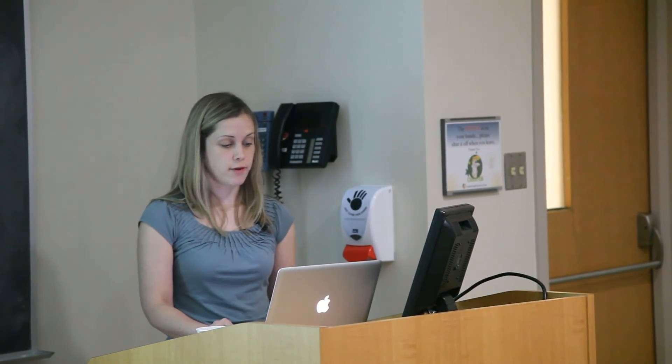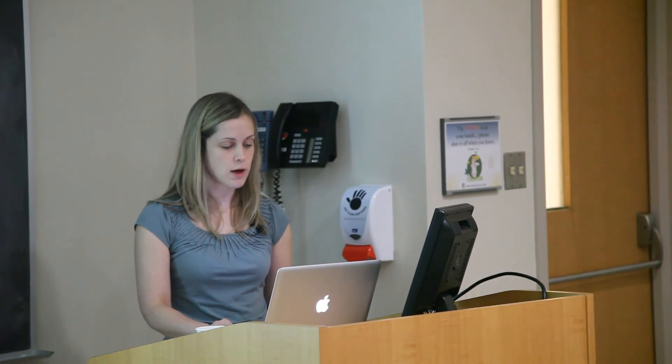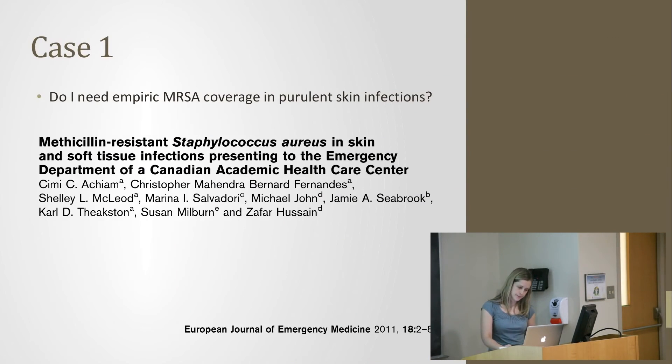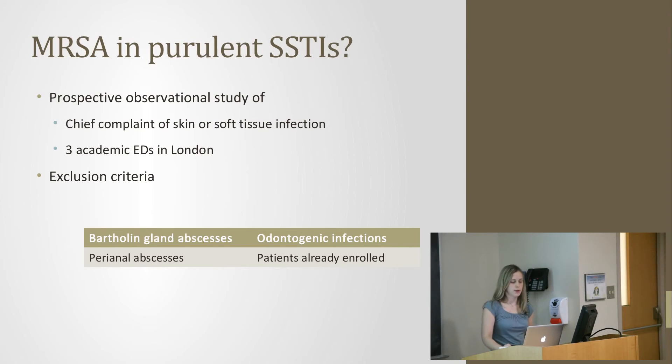That article is good and comprehensive but it doesn't tell us about MRSA in skin and soft tissue infections here. Resistance has geographic variations and bacterial makeup does as well. So I looked at this study done here, published this past year. It was a prospective observational study of chief complaint of skin or soft tissue infection in three academic emergencies in London. They excluded a small number of patients with abscesses associated with different bacteria. They included everything from cellulitis to abscesses to ulcers.